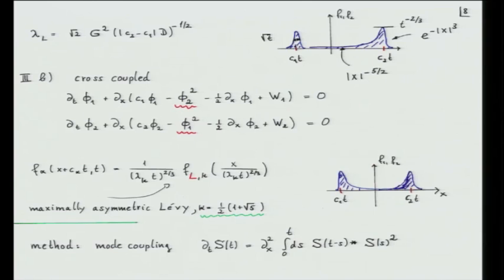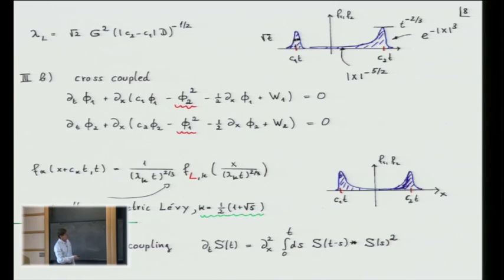To give you a feeling for what this looks like: you have a diffusive peak. The asymmetric Levy distribution has one tail which decays very quickly — in this case like e to the minus x cubed — and this is away from the diffusive peak. On the other side of the Levy distribution, which is asymmetric, it decays very slowly with a power law. This power law is what produces the interaction between modes.